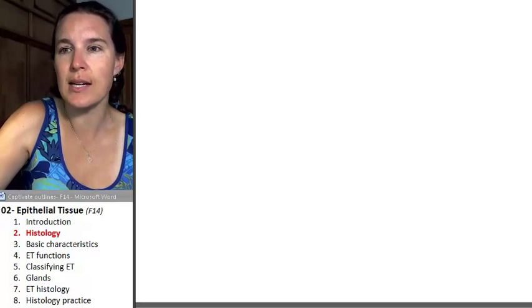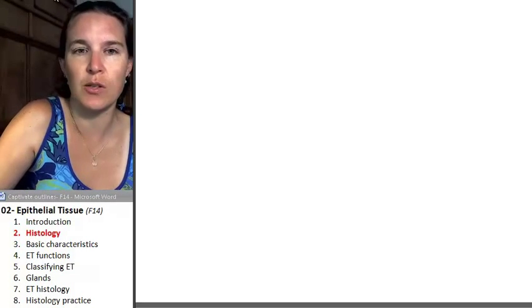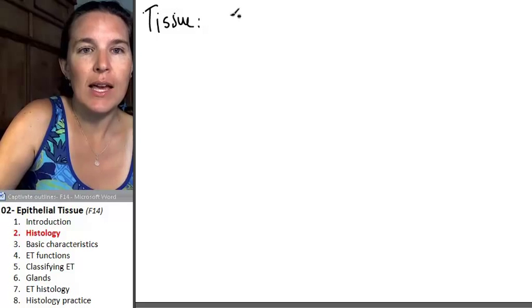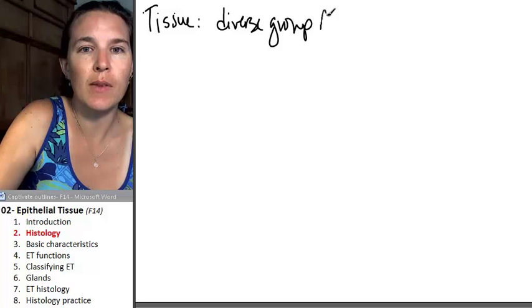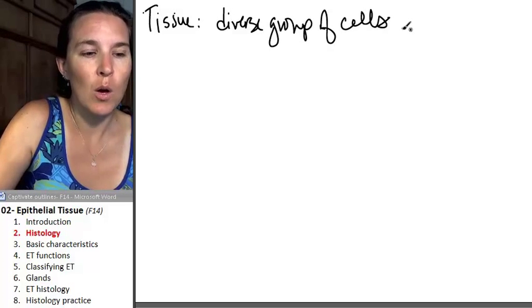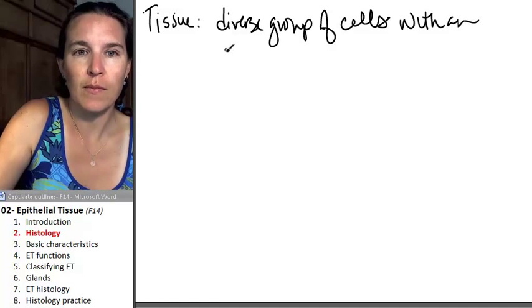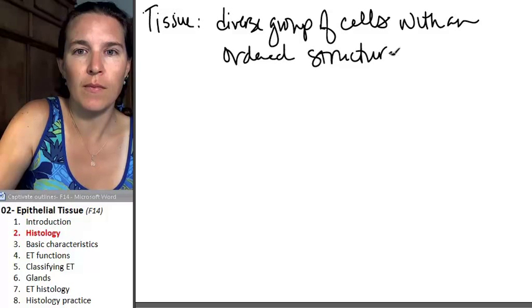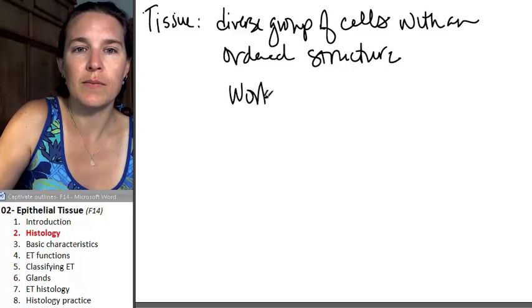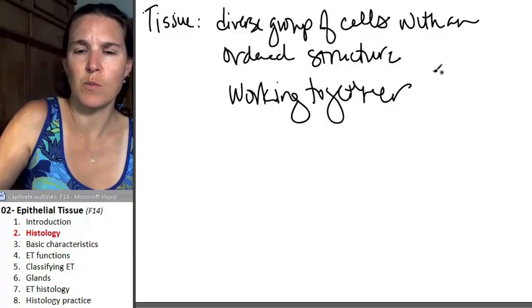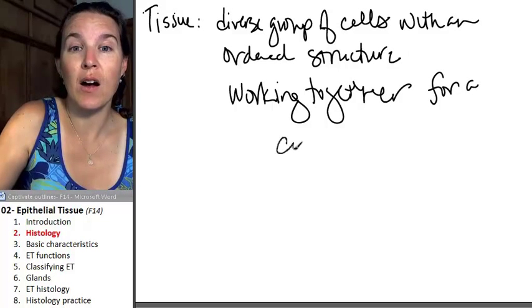Okay, what is a tissue? Let's get a definition of tissue to start us off. A tissue is a diverse group of cells with an ordered structure working together for a common function.